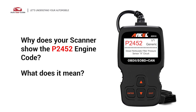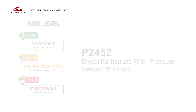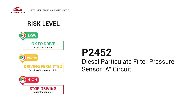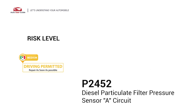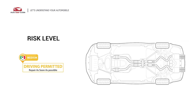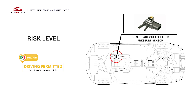Why does your scanner show the P2452 engine code? What does it mean? P2452 is a diagnostic trouble code for diesel particulate filter pressure sensor A circuit. It indicates the PCM has detected a malfunction in the electrical circuit of the diesel particulate filter pressure sensor.